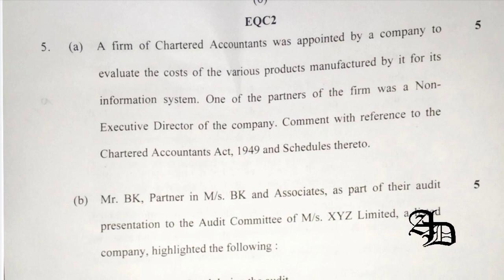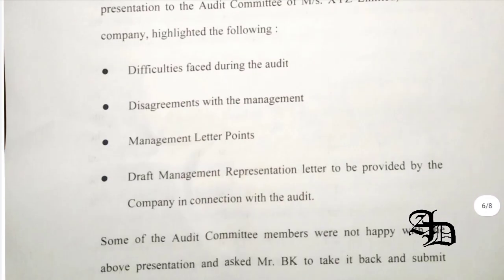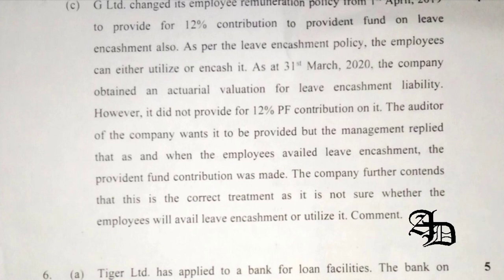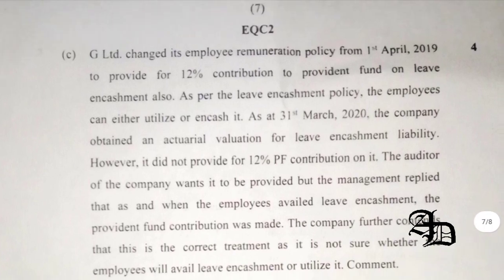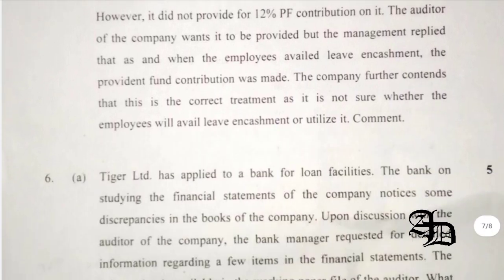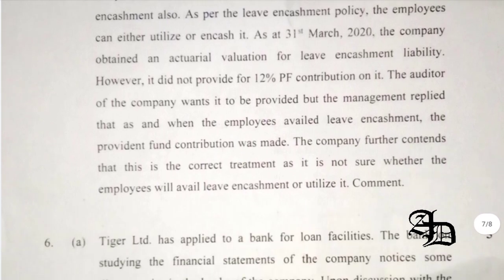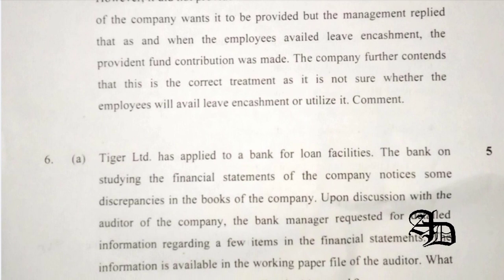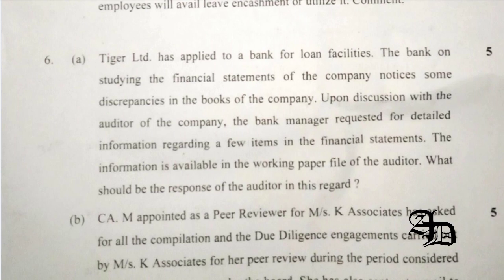Question 5a was related to a firm trying to participate in cost evaluation. As per Clause 4, Part 1 of the Second Schedule, there is some restriction, but in this case there is no restriction — so in my opinion, Question 5a involves no misconduct. Question 5b and 5c were related to a company ensuring employee welfare. Actuarial valuation should be done, and expenses should be booked. Leave encashment and utilization should be calculated based on actuarial reports.